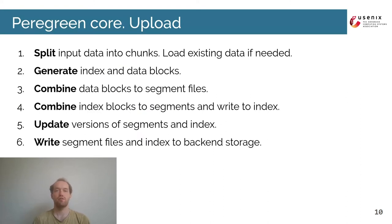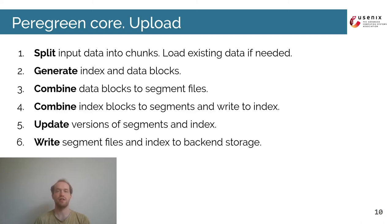Let's dive into how the Peregrine core performs data manipulation operations. The first is data uploading. When new data comes in, it is split into data chunks. We then go through the chunks, encode the data, and create index blocks. For index blocks, the core also calculates metrics. The core then combines encoded chunks into segment files according to block and segment intervals, and combines index blocks into segments that are written into the index. The core also updates versions of segments and the index, and finally writes segment files and the index to backend storage. Uploading is complete only when all steps are completed successfully, ensuring integrity of our data.